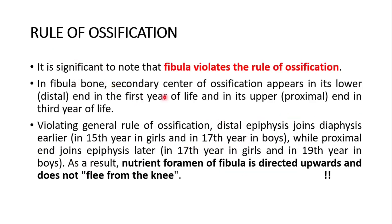It is significant to note that the fibula violates the rule of ossification — it doesn't follow the law of ossification. In the fibula, a secondary center of ossification appears in its lower distal end in the first year of life, and in its upper proximal end in the third year of life. Violating the general rule, the distal epiphysis joins the diaphysis earlier — in the 15th year in girls and in the 17th year in boys — while the proximal end joins later — in the 17th year in girls and 19th year in boys. As a result, the nutrient foramen of the fibula is directed upwards and does not flee from the knee.